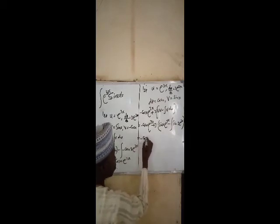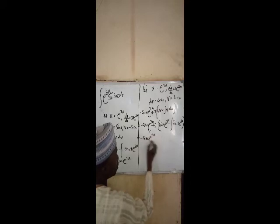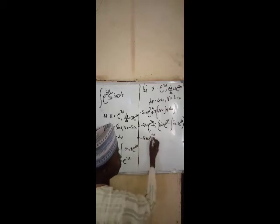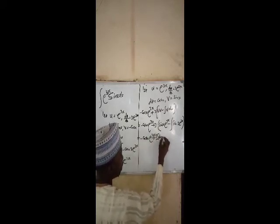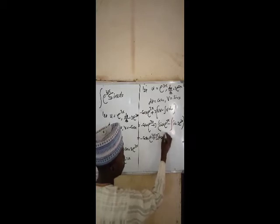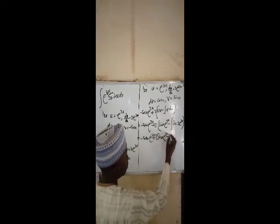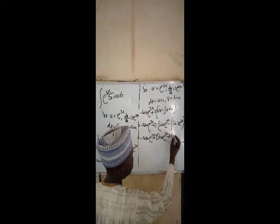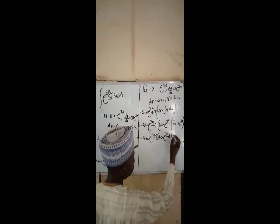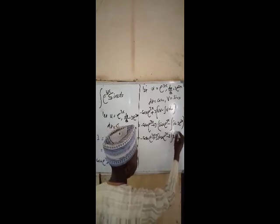Therefore this becomes minus cos x times e to the power of 3x, plus 3 sin x times e to the power of 3x, minus 3 times the integral of 3e to the power of 3x times sin x dx.